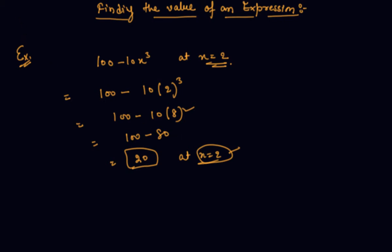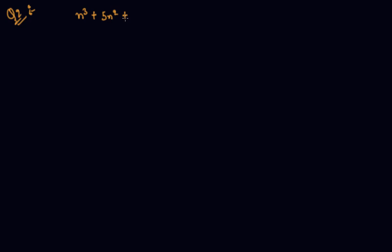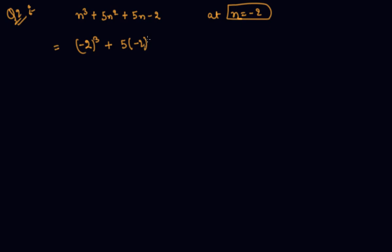Let me give you one more example — Question 2 — in which I have to find out the value of this expression. What I will do here is put the value of n equal to minus 2 directly in the equation. So: minus 2 cubed plus 5 times minus 2 squared plus 5 times minus 2, then minus 2.